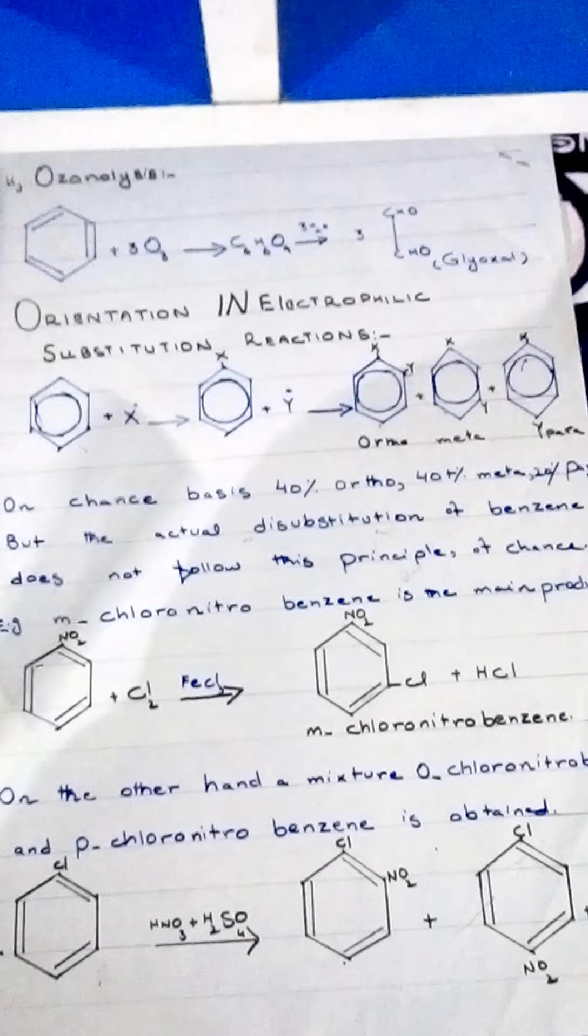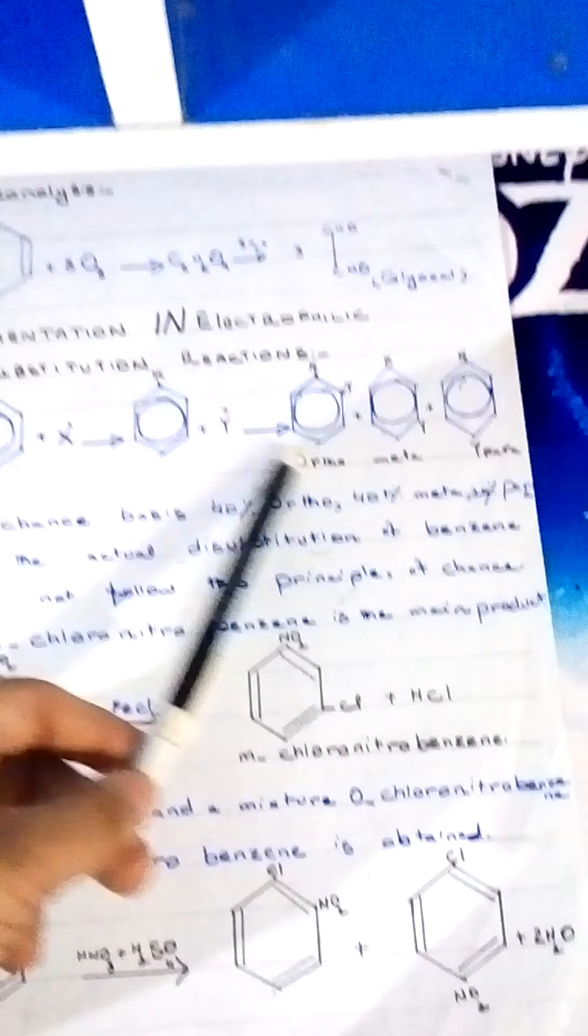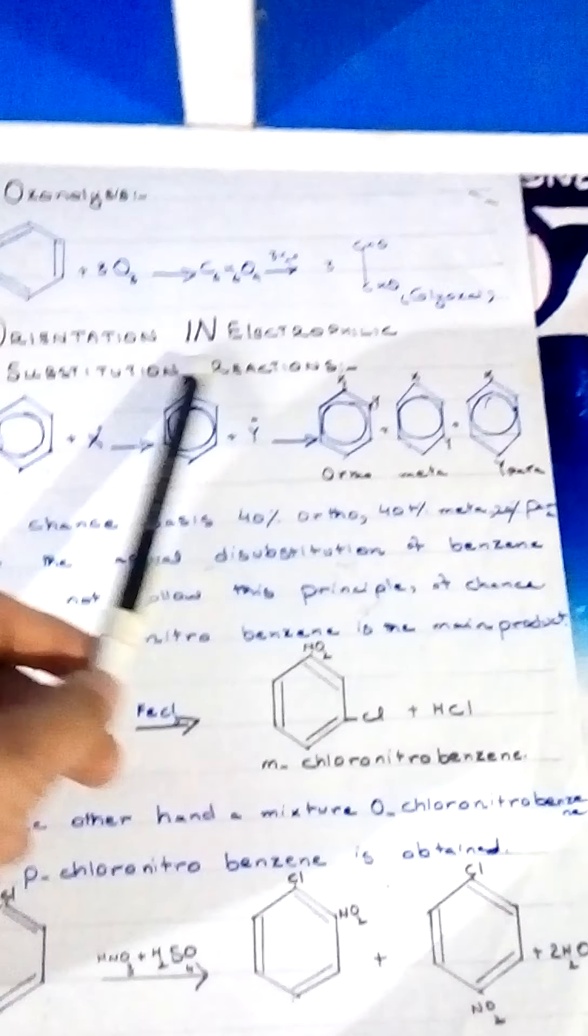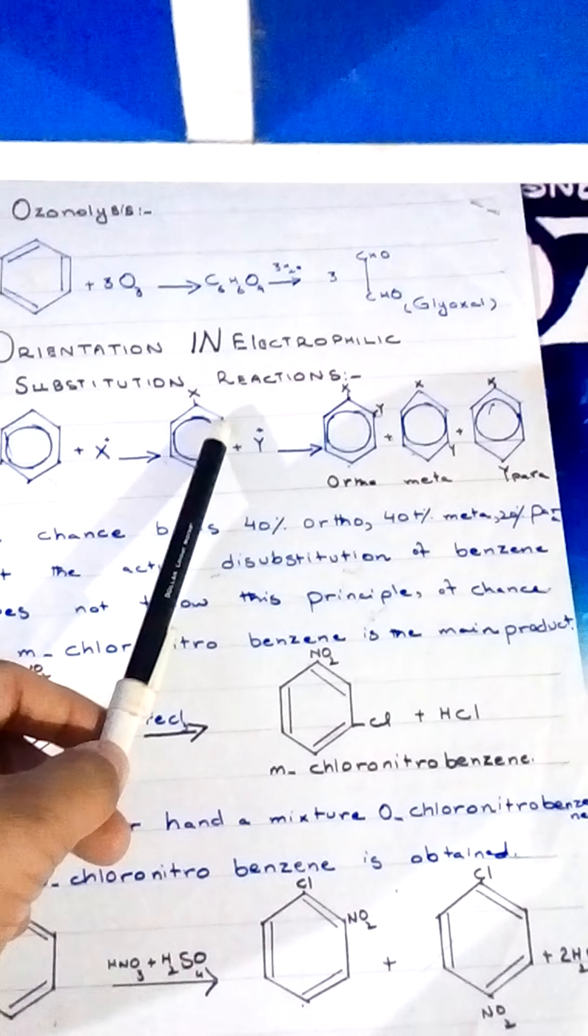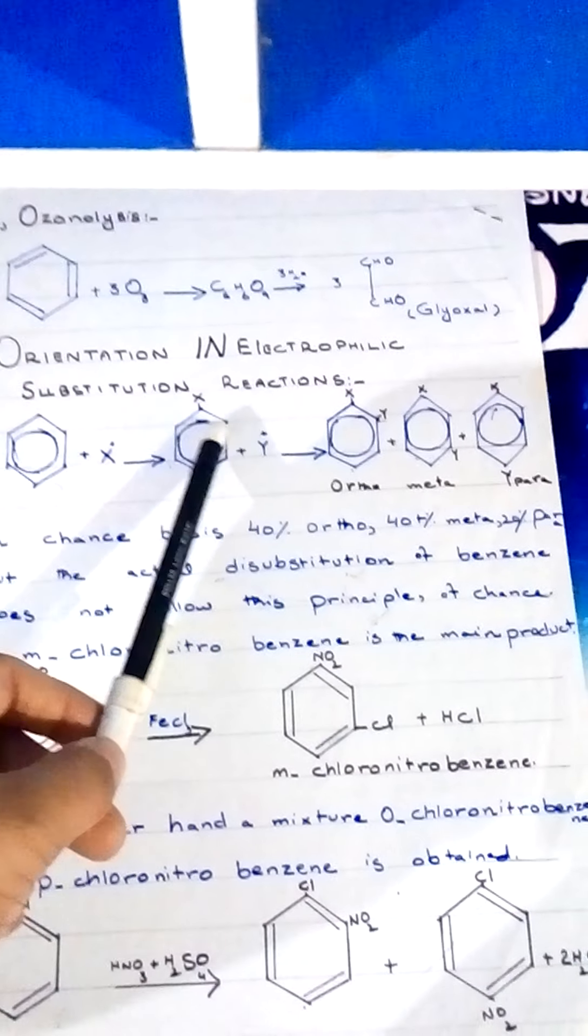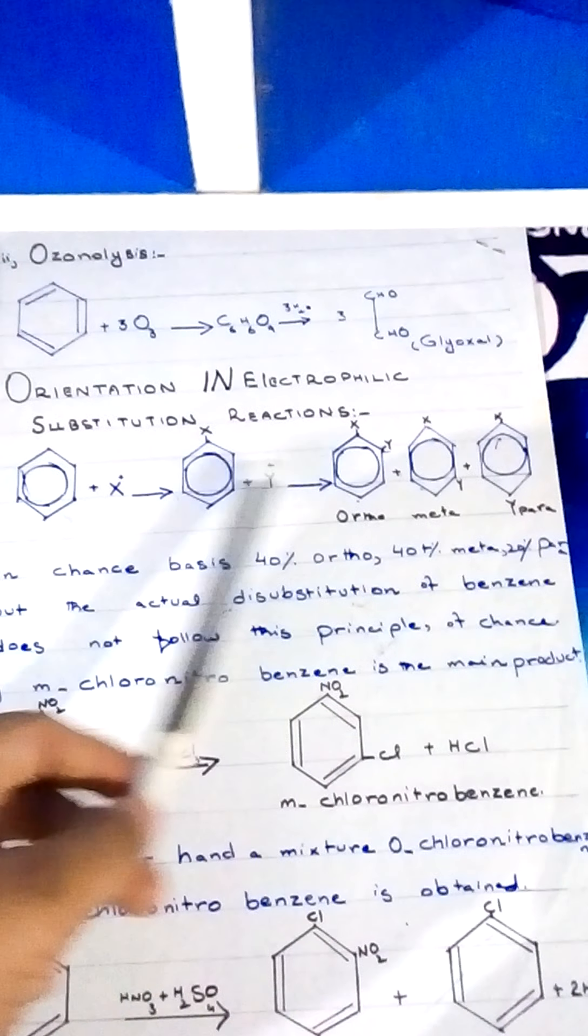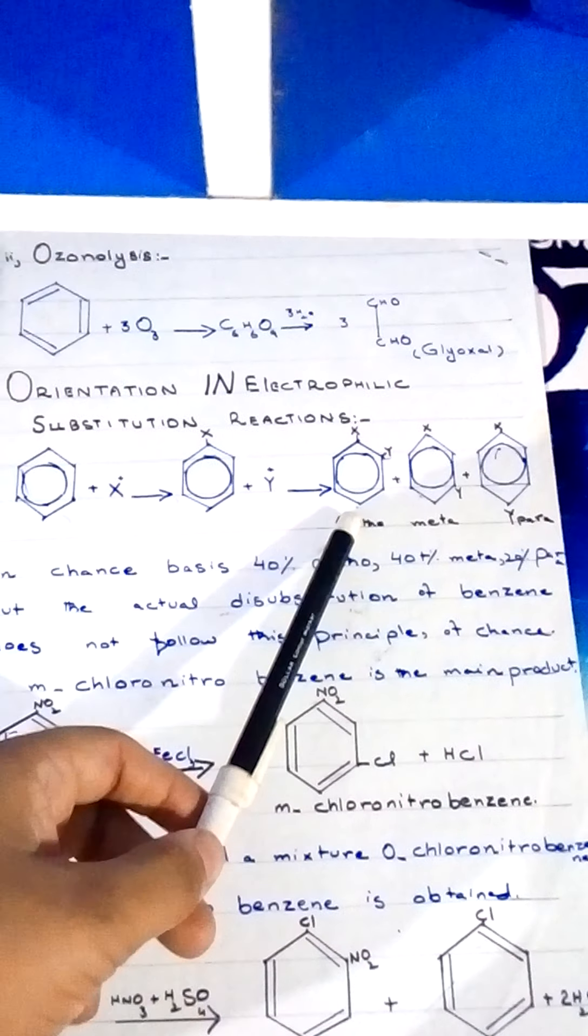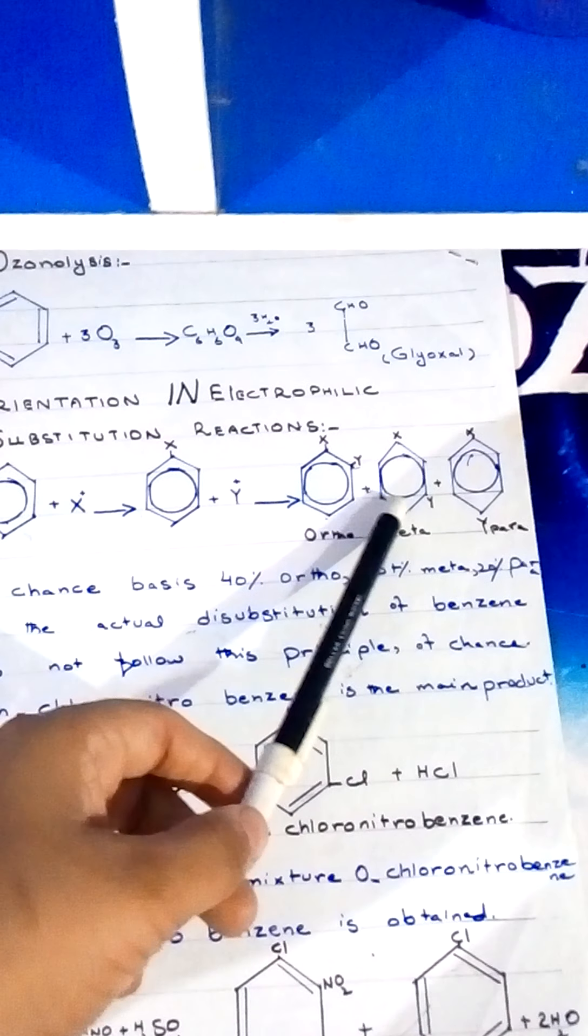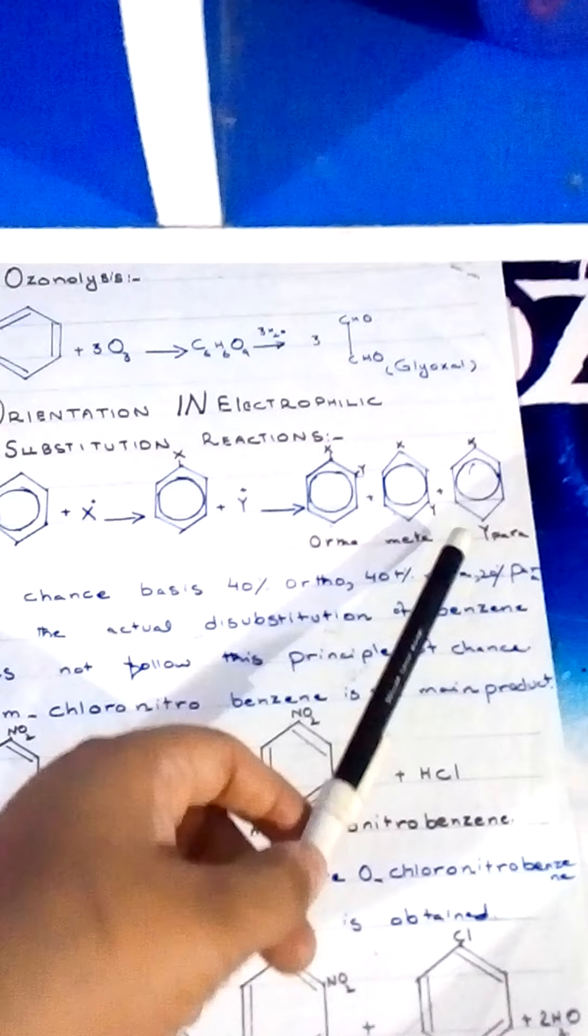This position may be ortho, meta, or para. What is ortho position? When Y is attached to the carbon atom adjacent to the already present group, this is called ortho. The next position is meta, and the opposite position is para.